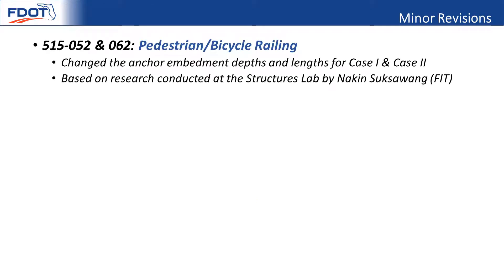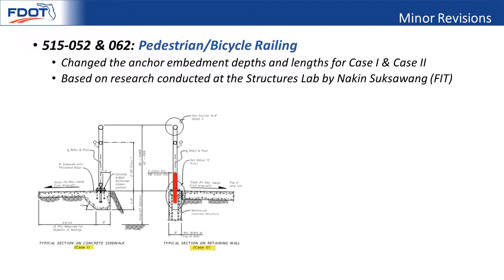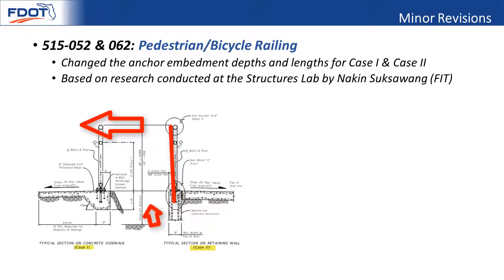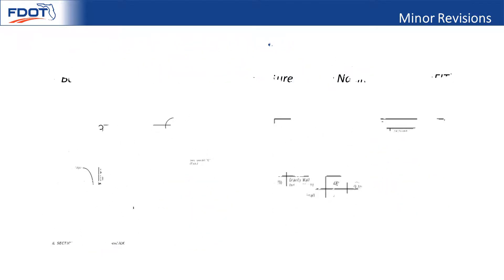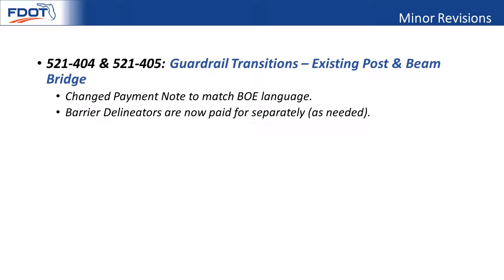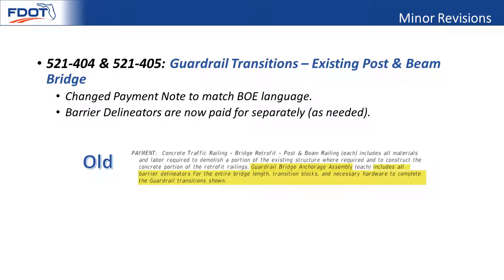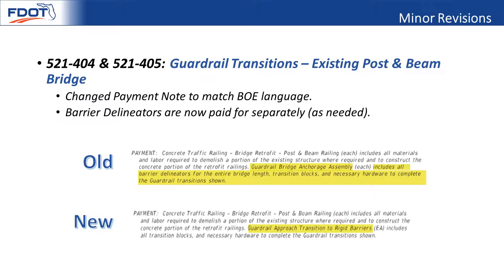We also have an ongoing research project by FIT. They did some testing — actually built a section of a post for the pedestrian rail and pulled on it until the anchors came out — and we found it was always concrete failure. So what we had was more than what was needed, so we reduced those. Indexes 521 404 and 405 — we just have a little update on these with the pay item descriptions. It was requested that we change these to not have the delineators included in the cost, so that will be a separate pay item.